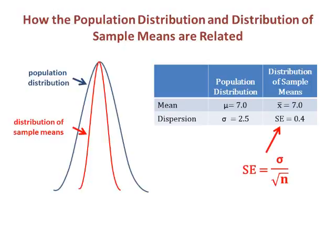The measure of dispersion for the distribution of sample means is not the standard deviation, but is called the standard error. The standard error is mathematically related to the standard deviation of the population distribution. We find it by taking the standard deviation of the population and dividing it by the square root of n. As a result, the distribution of sample means is the same height as the population distribution, but is skinnier.